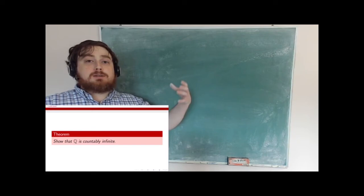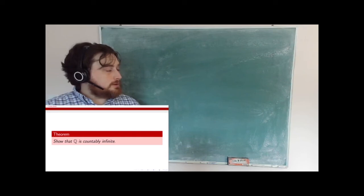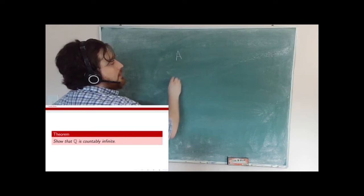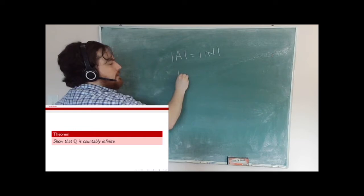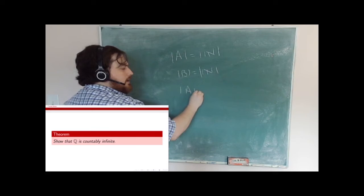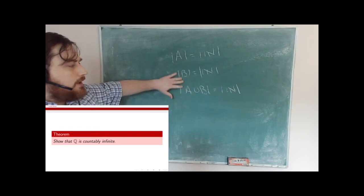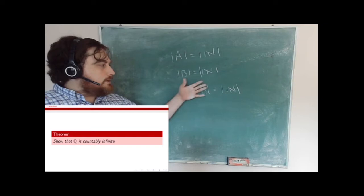Now I want to show that the set of rational numbers is countable — are there as many rational numbers as natural numbers? First, let's have a lemma: suppose A is countably infinite, so |A| = |N|, and |B| = |N|. Then I claim that |A ∪ B| is also equal to |N|. If I take two countably infinite sets, their union is again countably infinite.